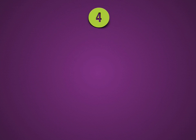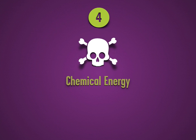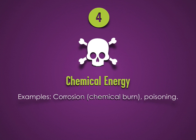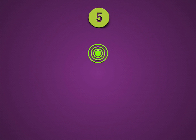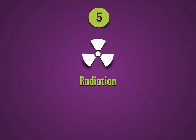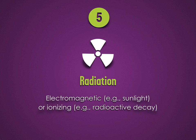A fourth kind of energy is chemical energy, as in corrosion and poisoning. And a fifth kind of energy that can cause injury is radiation, either electromagnetic, as in the case of sunlight, or ionizing, as in radioactive decay.